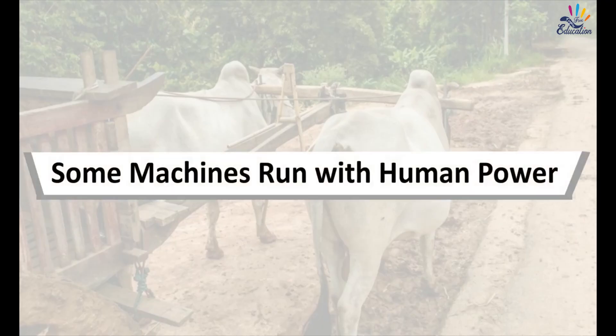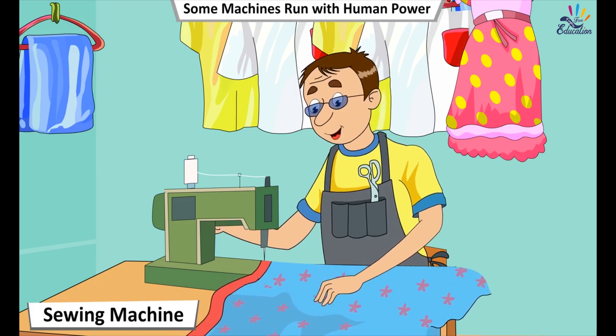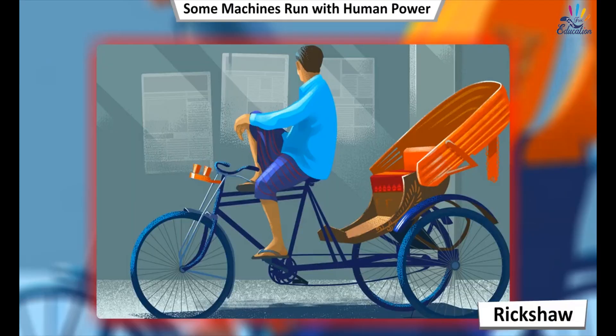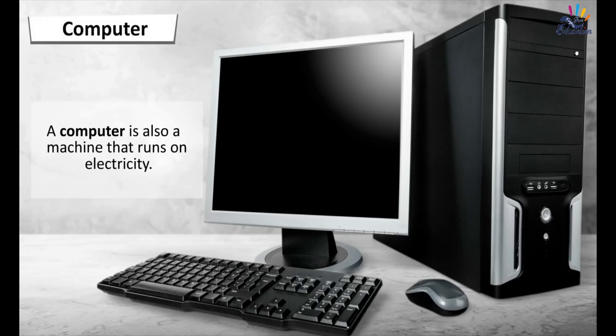Some machines run with human power, for example, sewing machine, rickshaw, cart. A computer is also a machine that runs on electricity.